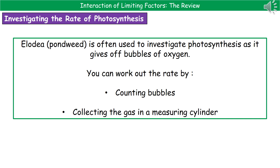Welcome to our review on the interaction of limiting factors. When we actually want to carry out investigations on the rate of photosynthesis, our go-to plant in biology is Elodea, which is basically the scientific name for pondweed.